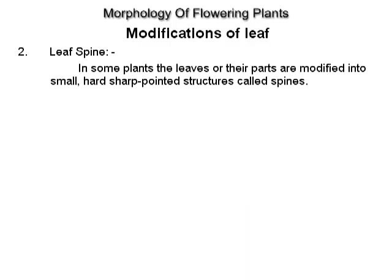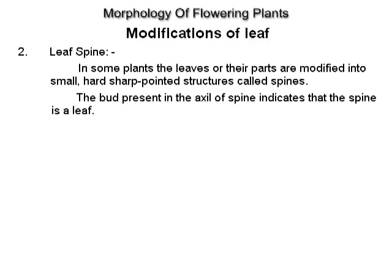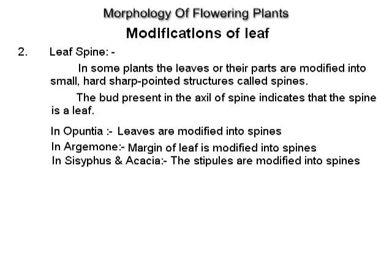Leaf spine. In some plants, the leaves or their parts are modified into small, hard, sharp, pointed structures called spines. The bud present in the axil of a spine indicates that the spine is a leaf. In Opuntia, leaves are modified into spines. In Argemone, the margin of the leaf is modified into spines. In Ziziphus or Acacia, the stipules are modified into spines.